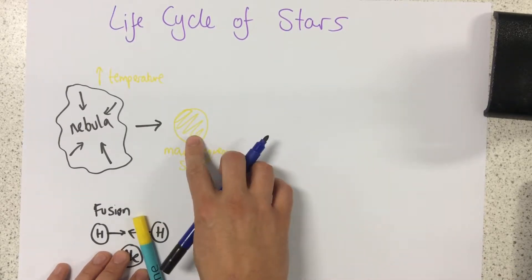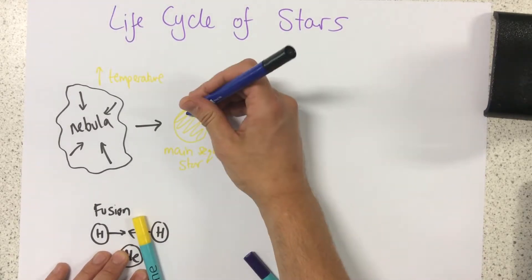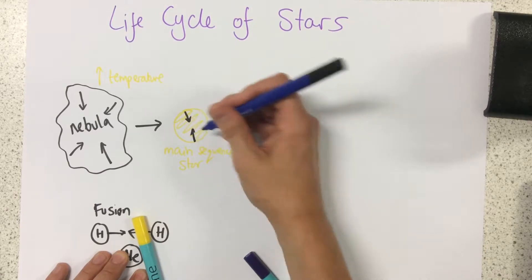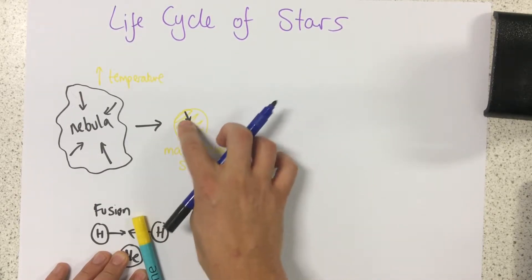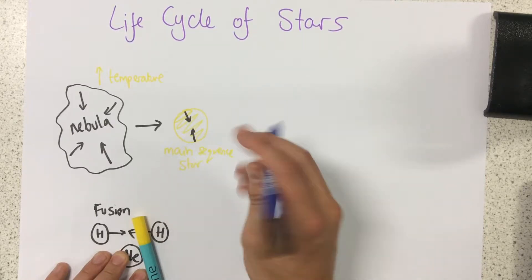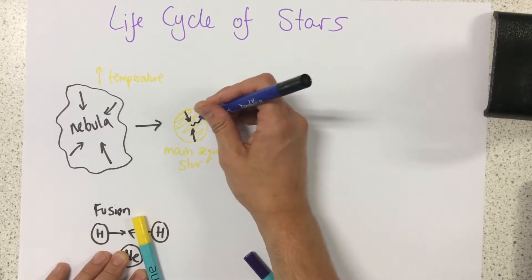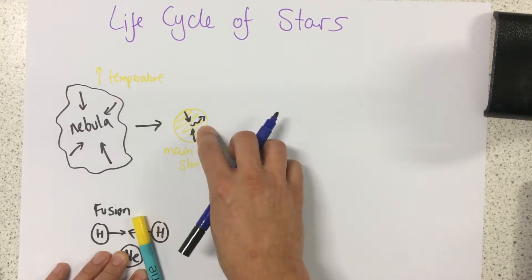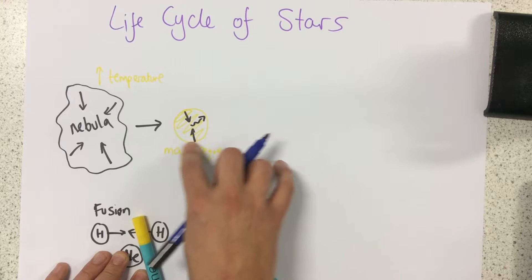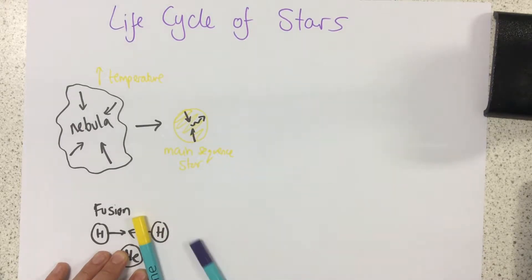The reason why it can stay stable is even though there's gravitational pull pulling everything inwards, because of all the fusion reactions happening in the core, there's also this outwards force from the heat created by the fusion. As a result, it stays stable and can do for billions of years.